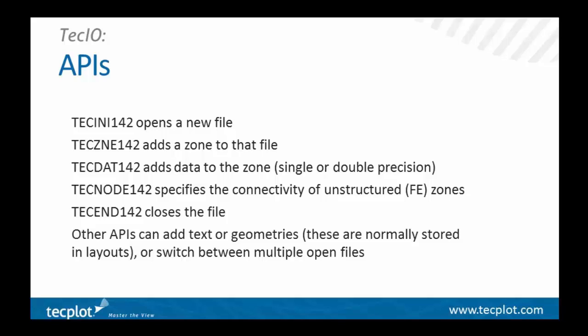The calling sequence is the same whether you're creating a PLT file or an SZPLT file, and each of the APIs is suffixed with a version number. TechINI opens a new file and has a parameter where you specify whether you want PLT or SZPLT. TechZNE adds a zone to that file — you'll call it once for every zone. TechDAT adds data to the zone; TechIO supports either single or double precision. TechNODE is called for unstructured data to pass in the cell connectivity. Finally, to close the file, you call TechEND.